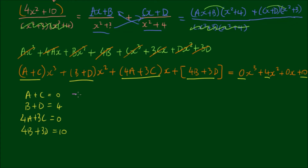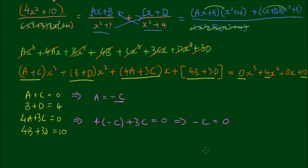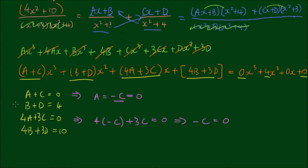From a + c = 0, we get a = −c. Substituting into 4a + 3c = 0 gives 4(−c) + 3c = 0, which simplifies to −c = 0, so c = 0 and therefore a = 0.